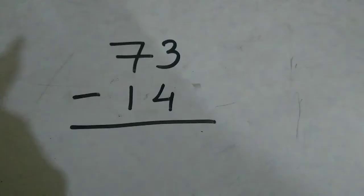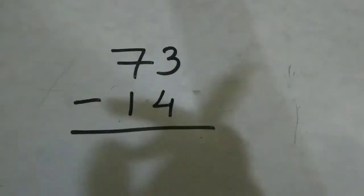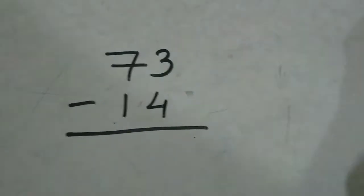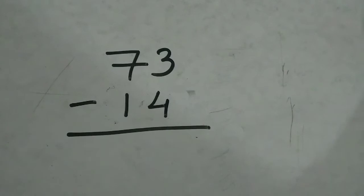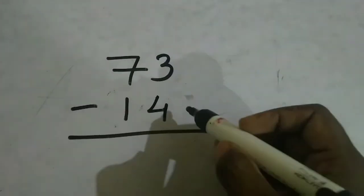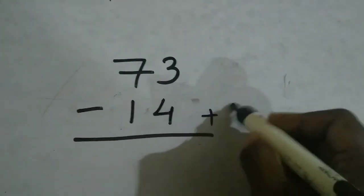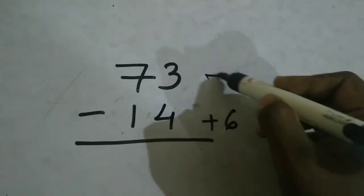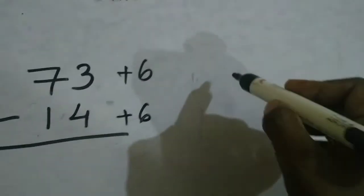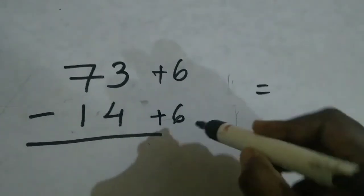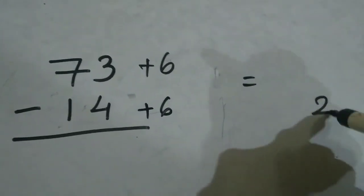The next example I am solving is 73 minus 14. Here just follow the same procedure I have told you. 14, let's make it 20. To make it 20, we have to add 6 here and also here 6.